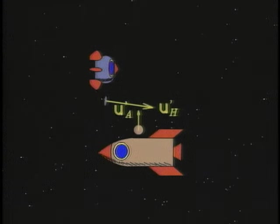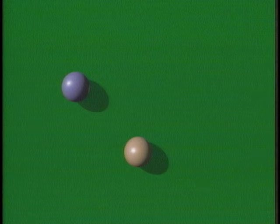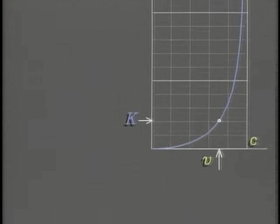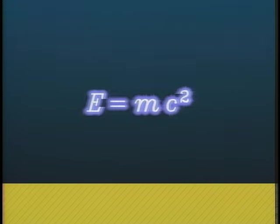By playing space billiards, we see the fastball rebound less than the slow one. Both mass and kinetic energy increase with speed. In fact, the kinetic energy curve is the same shape as the mass curve. So, E equals MC squared. Gleam.